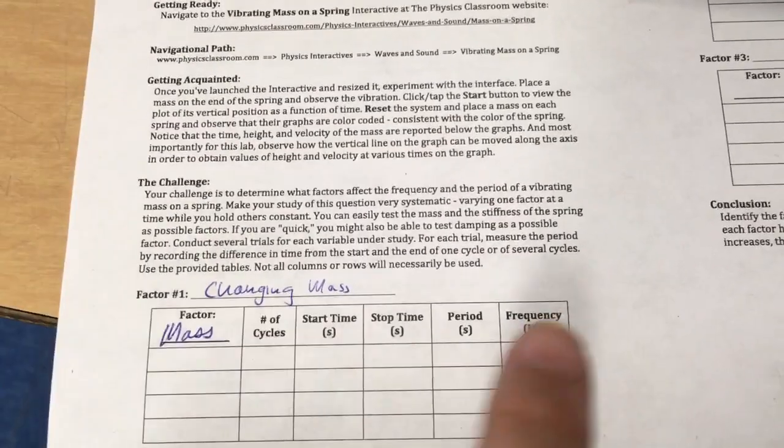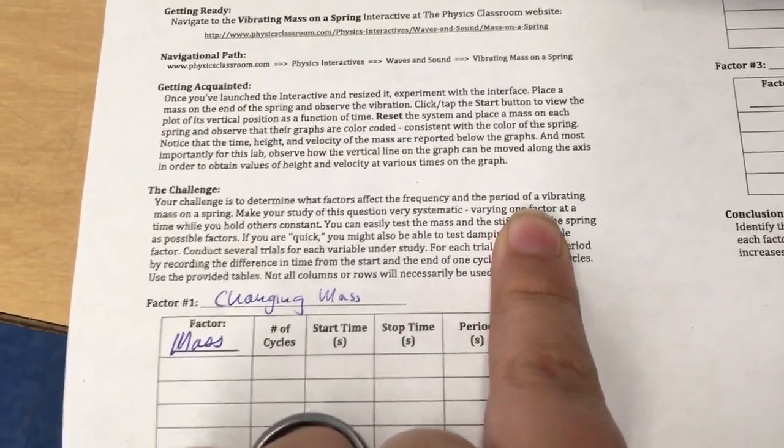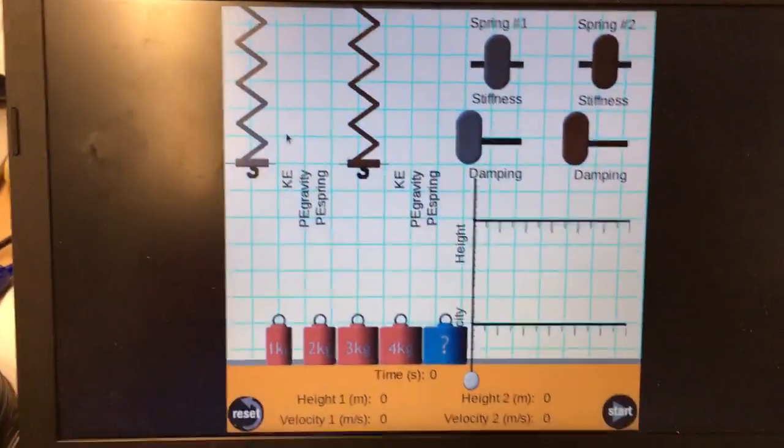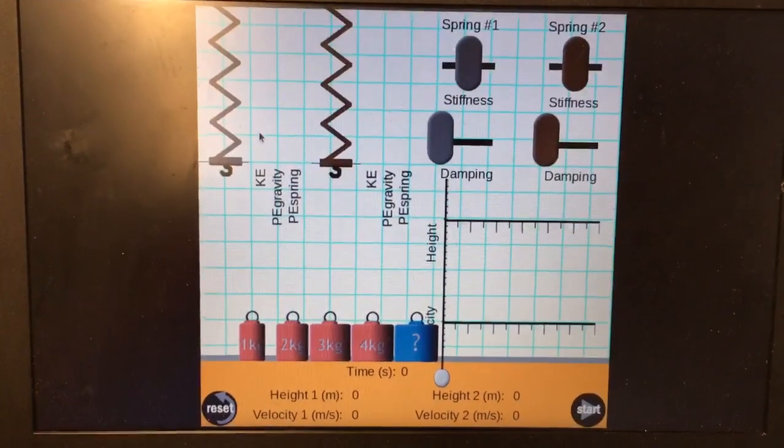Just like we said the other day, you only want to change one thing at a time. So the first thing I'm going to change is mass. If you come over here and look at the interactive or the simulator, it looks like this.